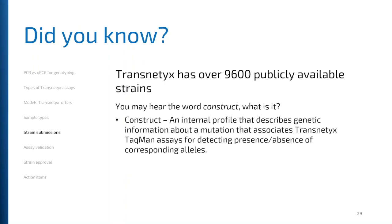Did you know that we actually have over 9,600 publicly available strains? You may hear a Transnetics team member say to search our database or search our constructs. A construct is an internal profile that describes the genetic information about a mutation, associated with our TaqMan assays for detecting the presence or absence of those corresponding alleles.